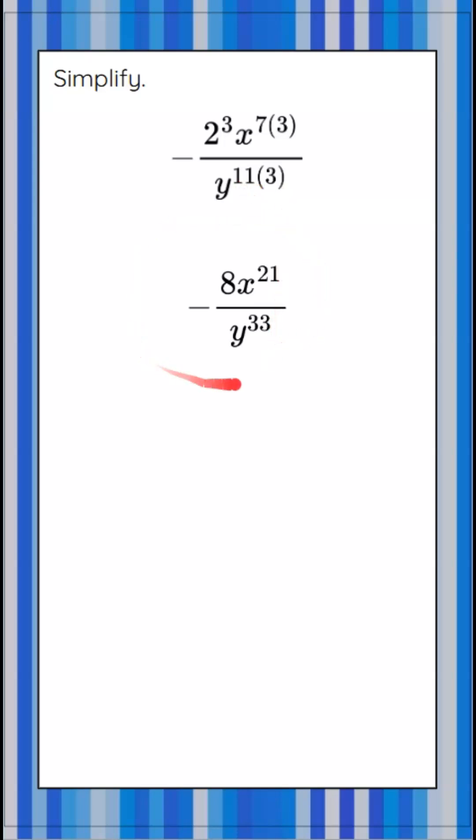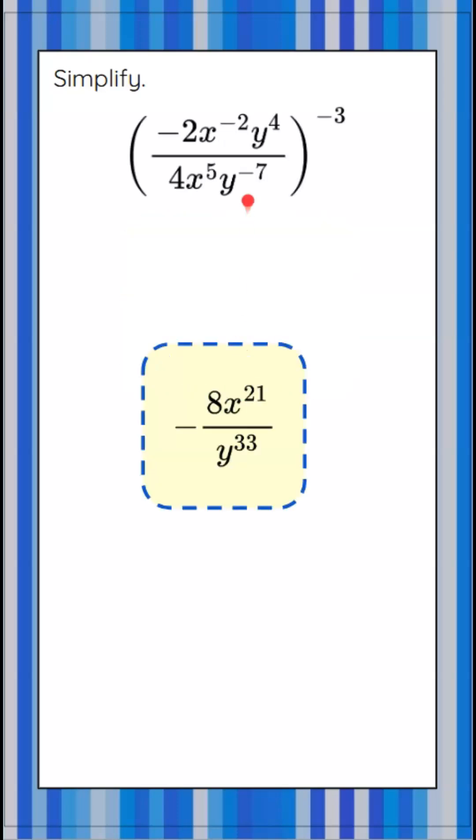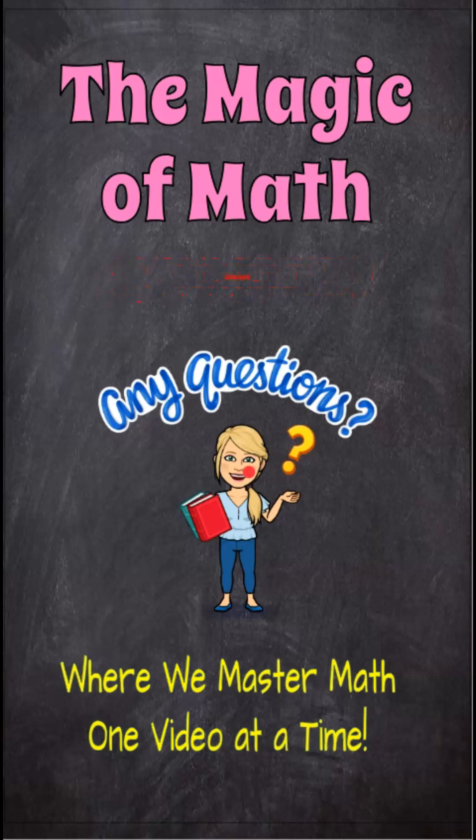And that's as simplified as it gets. We've cleared the negative exponents and combined terms with like bases. So our simplified version of our original power is 8x to the 21st divided by y to the 33rd. Thanks for joining me today at The Magic of Math, where we master math one video at a time.